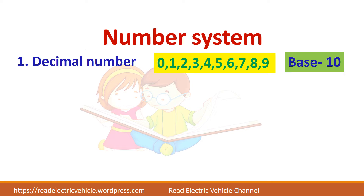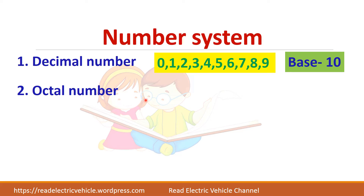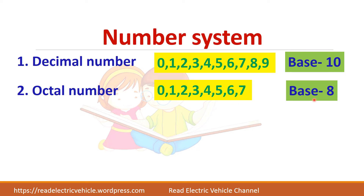Decimal numbers vary from 0 to 9 and we have a total of 10 numbers, so the base of the decimal number is 10. For octal numbers, the numbers vary from 0 to 7 and we have a total of 8 numbers, so the base of the octal number is 8.